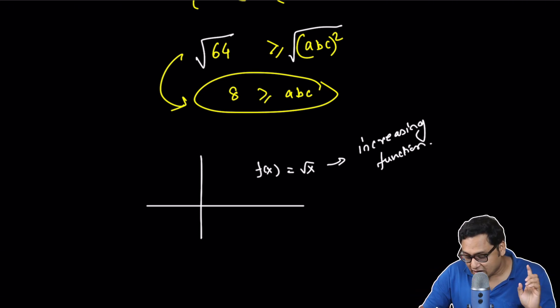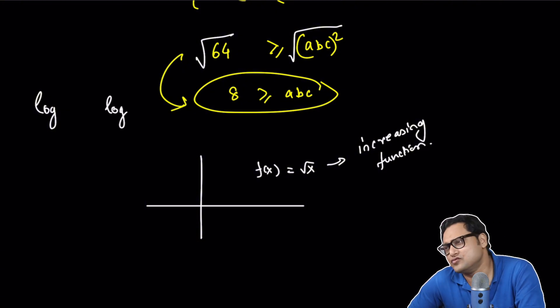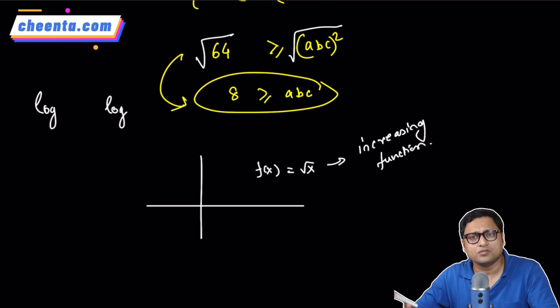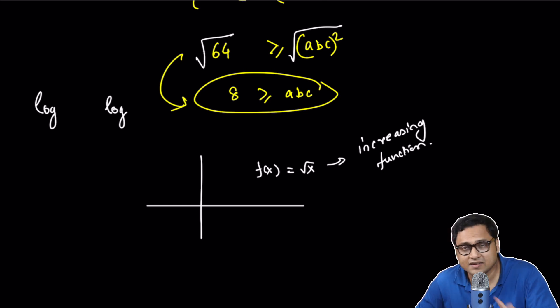So if I did take a log on both sides, I could have taken it. Now, here is a challenge question. Why is it true for increasing functions that if I apply an increasing function on both sides of an inequality, the inequality remains the same? It does not flip.